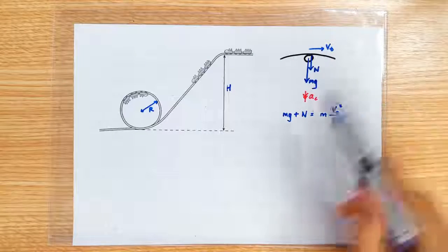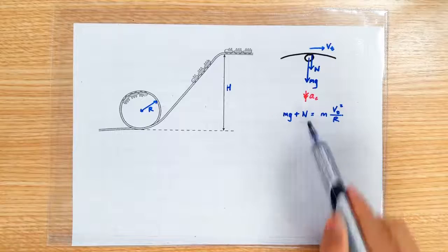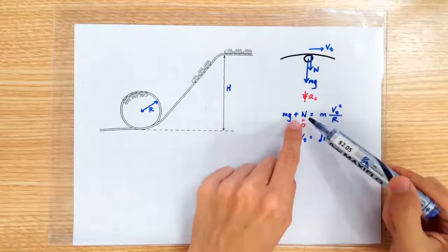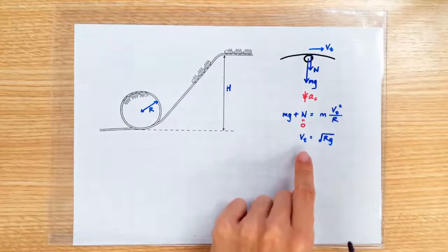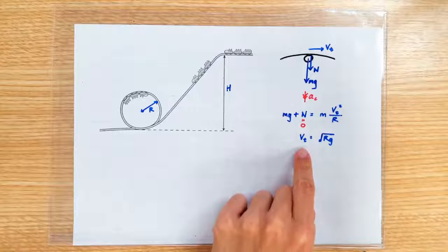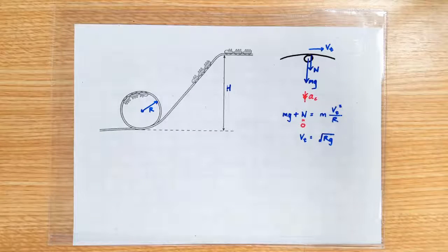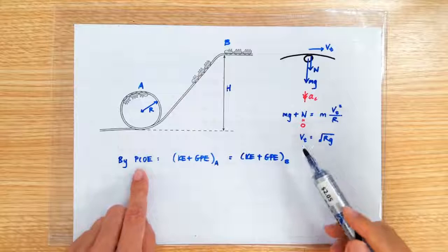So we solve for normal contact force to be zero and we get the speed at the top to be square root of rg. Applying the principle of conservation of energy...